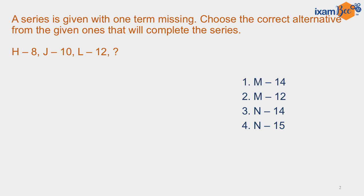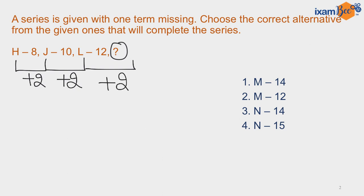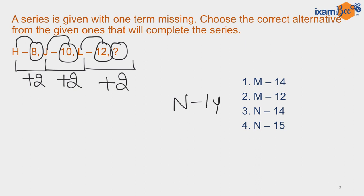An alphanumeric series is given and you have to find the missing term. If you focus carefully, you will find that an alternate series is given where numbers correspond to their position in the English alphabet. When you add 2 to the place value of H, you get J; adding 2 to J gives L; adding 2 to L gives N. The numbers 8, 10, 12 correspond to the place values of H, J, and L respectively, so the place value of N is 14. Therefore, option number 3 is the correct answer.